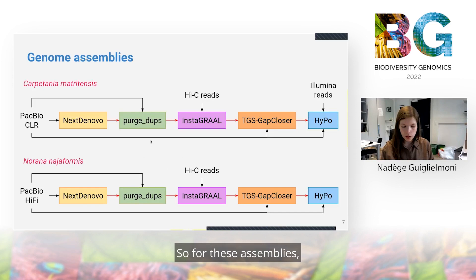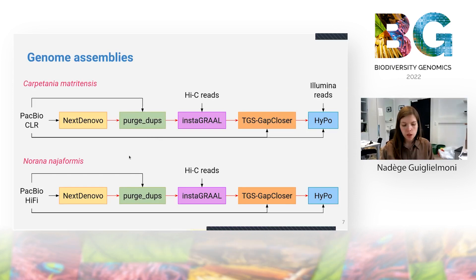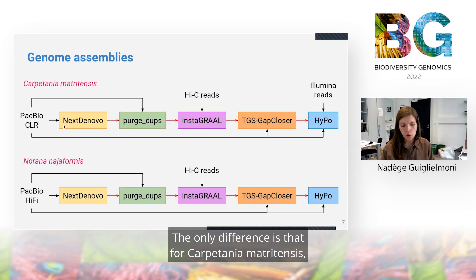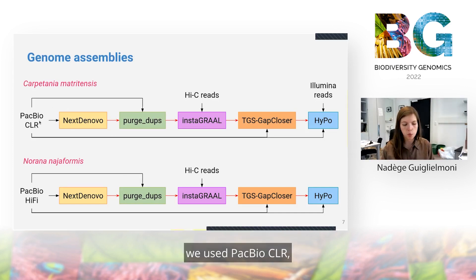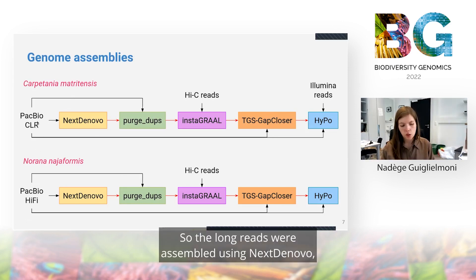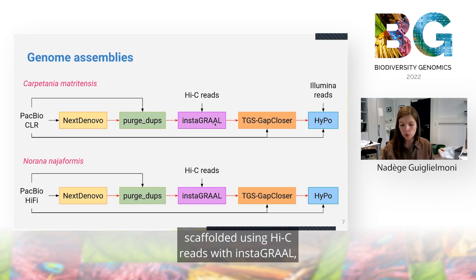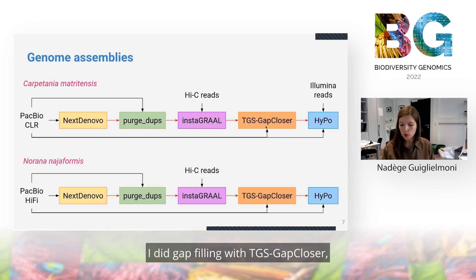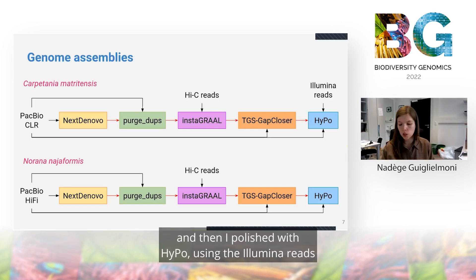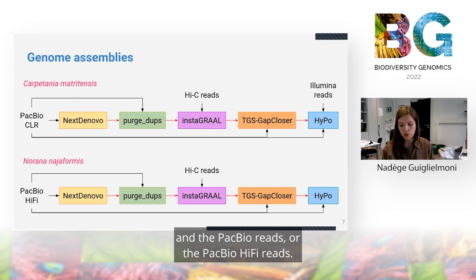For these assemblies, I used a genome assembly pipeline that was very similar for both species. The only difference is that for Carpetania metritensis we used PacBio CLR, and for Norana negeiformis, PacBio HiFi. Long reads were assembled using NextDenovo, then I purged haplotigs with Purge Dups, scaffolded using Hi-C reads with YAHS, did gap-filling with TGS GapCloser, and polished with Hypo using the Illumina reads and the PacBio CLR or HiFi reads.